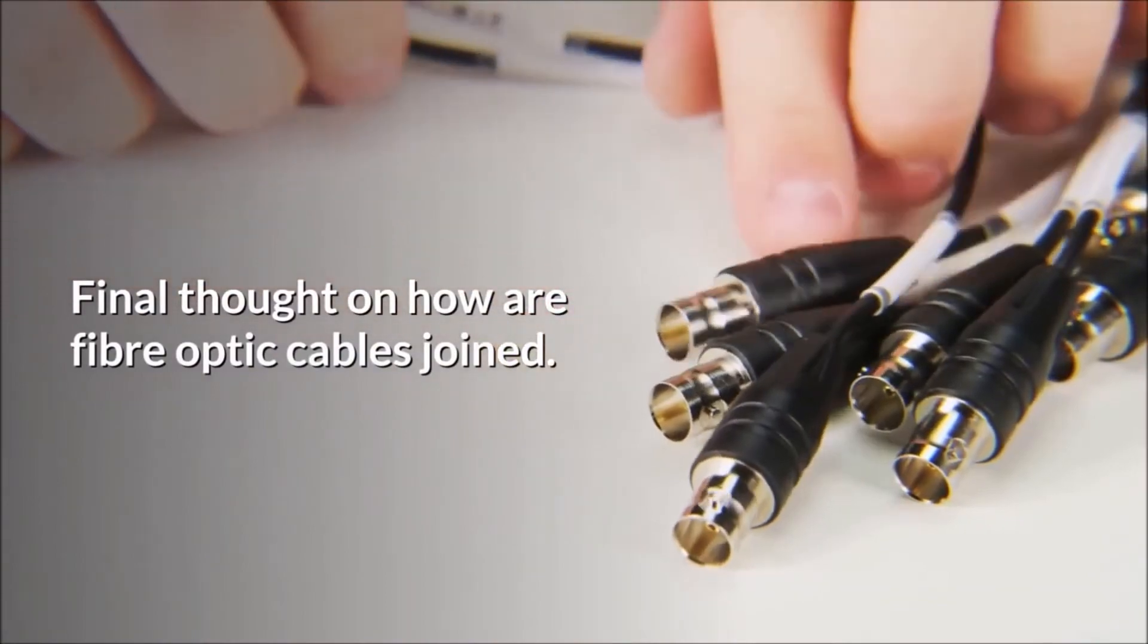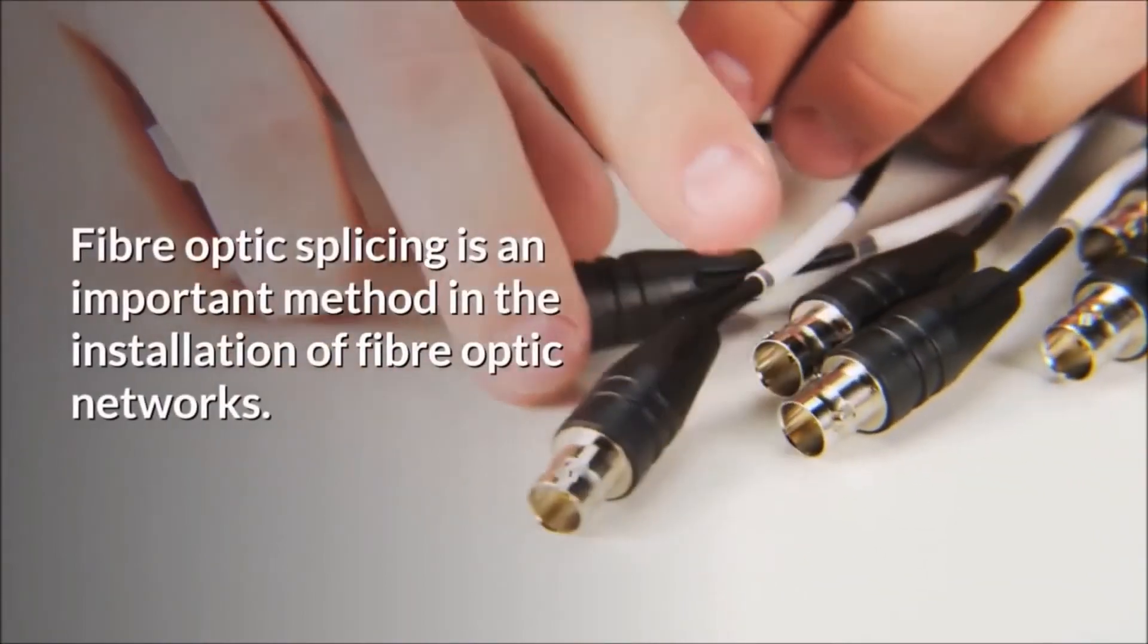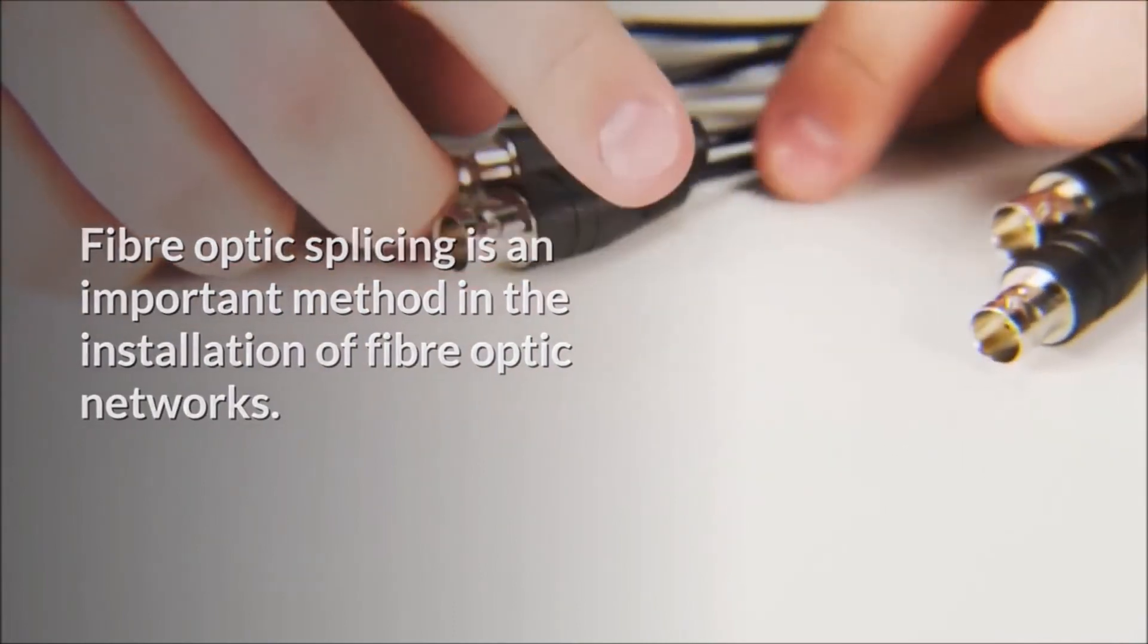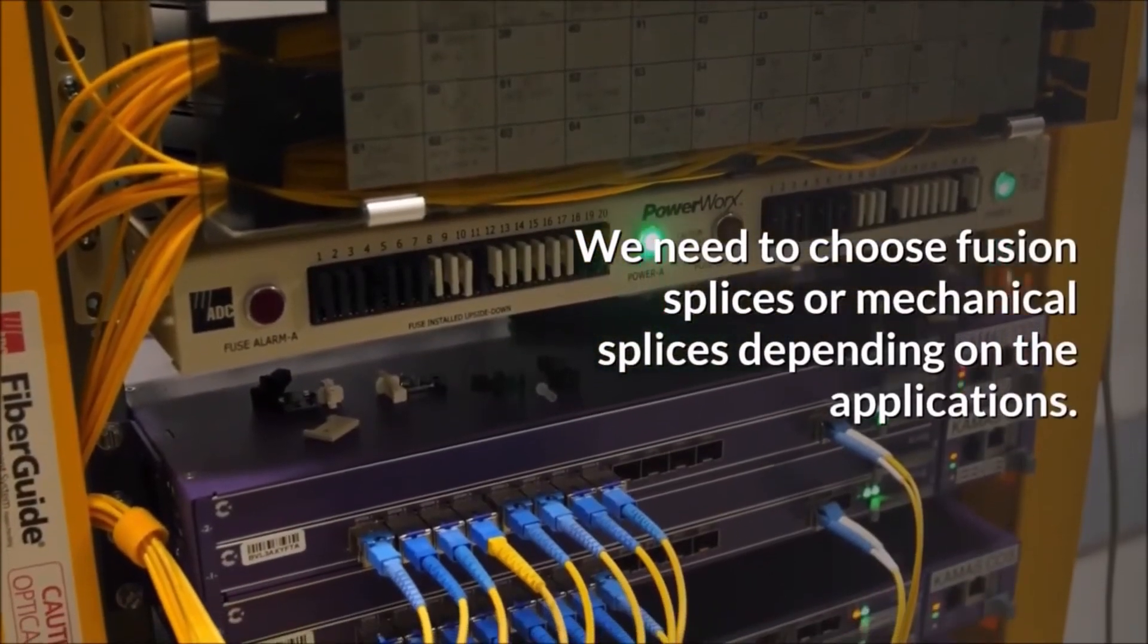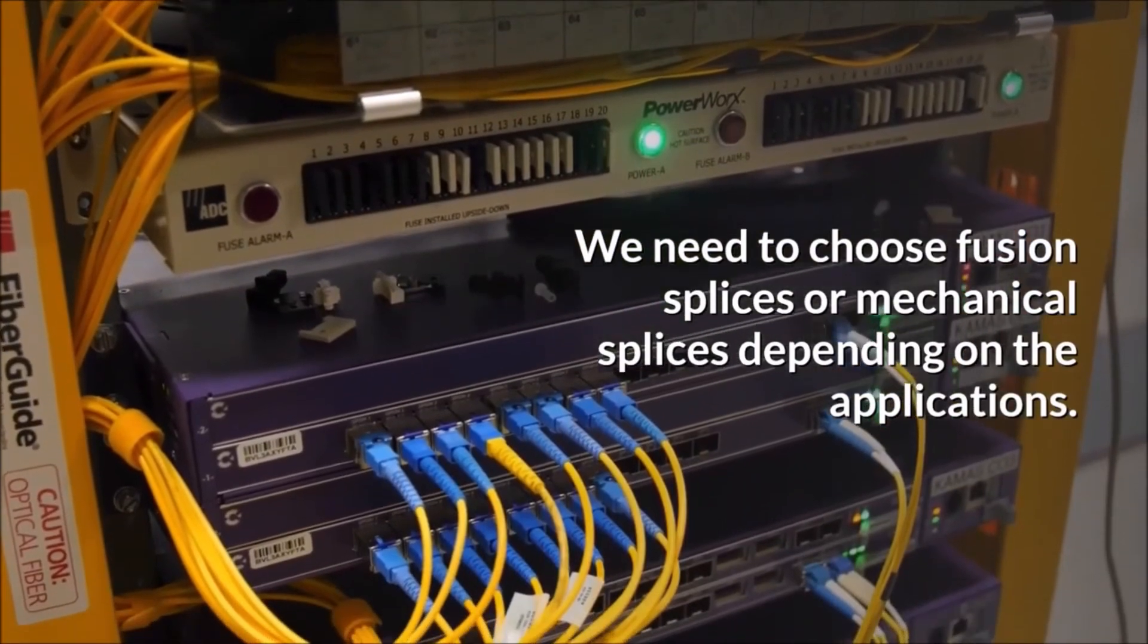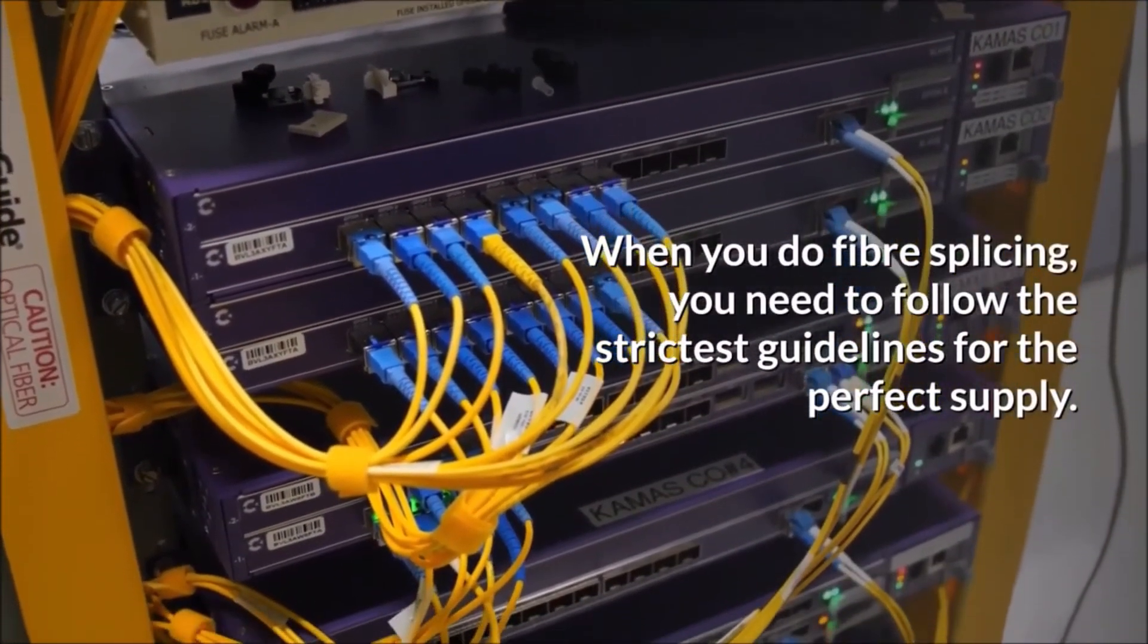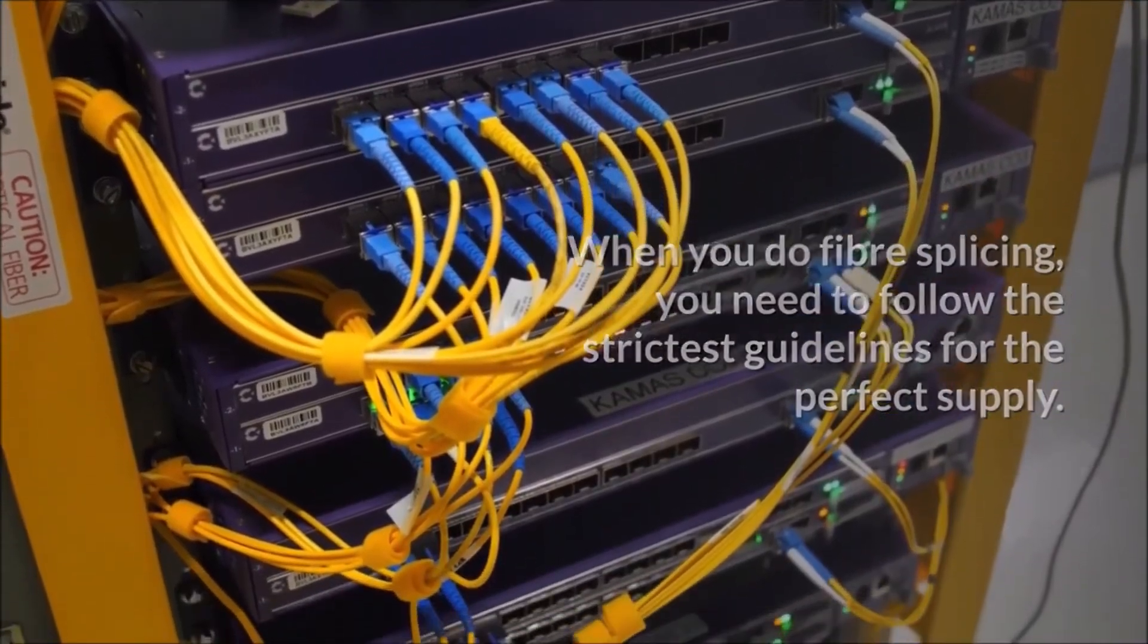Final thought on how a fiber optic cable is joined. Fiber optic splicing is an important method in the installation of fiber optic networks. We need to choose fusion splices or mechanical splices depending on the applications. When you do fiber splicing, you need to follow the strictest guidelines for the perfect supply. Also, it is important to keep all spraying tools clean.